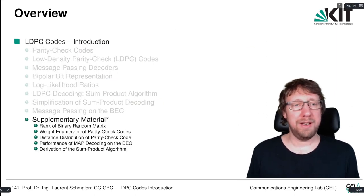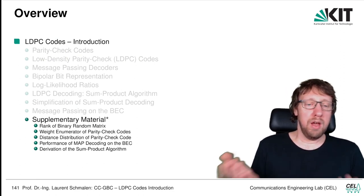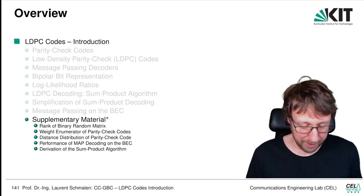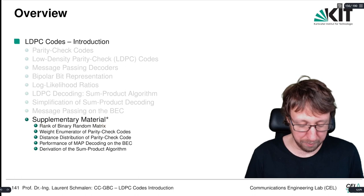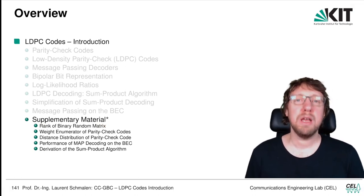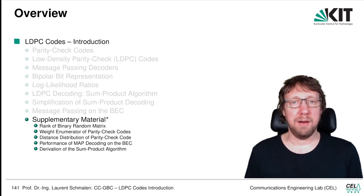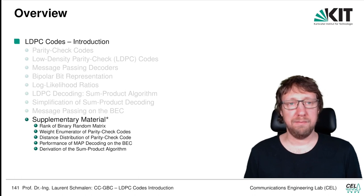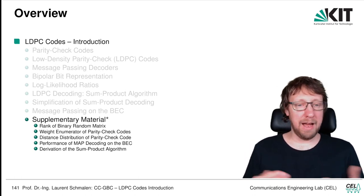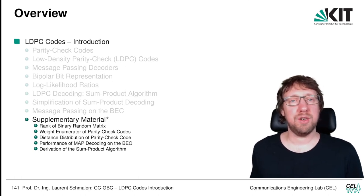With this, we have finished this chapter on the introduction to LDPC codes. In the following slides you will find supplementary material including the rank and proofs for the rank of a binary matrix, proof of weight enumerators, performance of MAP decoding, and the formal definition of the sum-product decoding algorithm. This material is beyond the scope of the lecture. I'd like to close this chapter and welcome you in the next one.